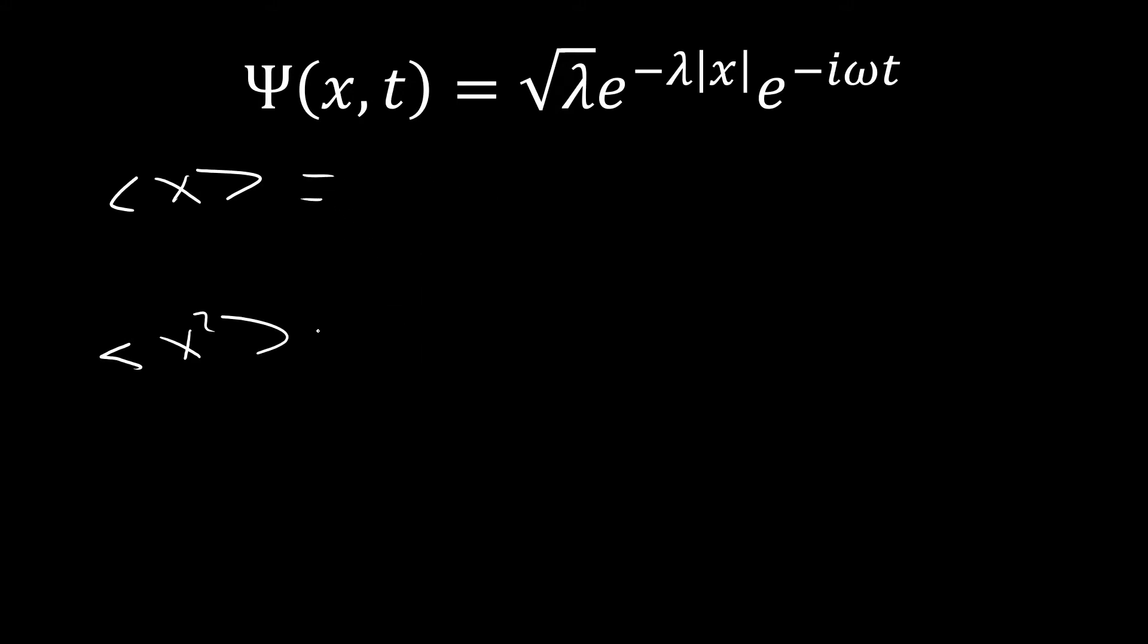We're going to use the two following formulas here for the expectation value of x. We're going to integrate over all space of x times the magnitude squared of our wave function with t set equal to 0. And then for x squared, we're doing the same thing, but now our x is just x squared.